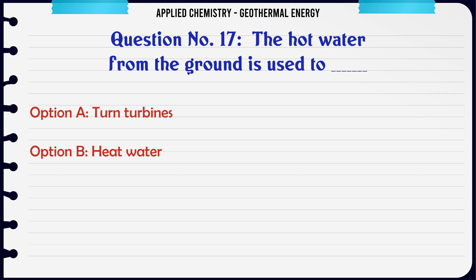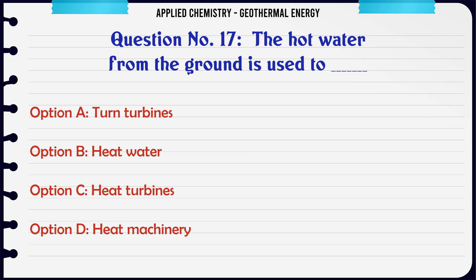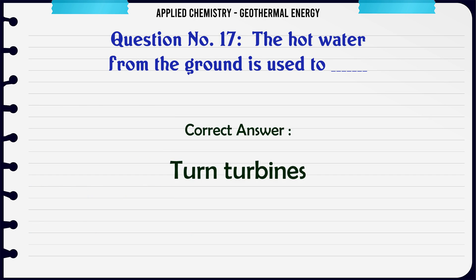The hot water from the ground is used to: A: Turn turbines, B: Heat water, C: Heat turbines, D: Heat machinery. The correct answer is turn turbines.